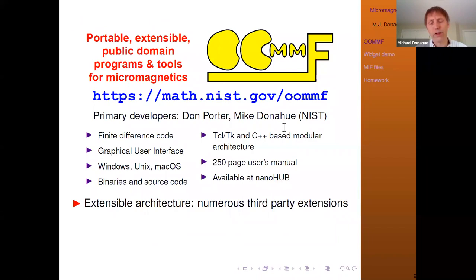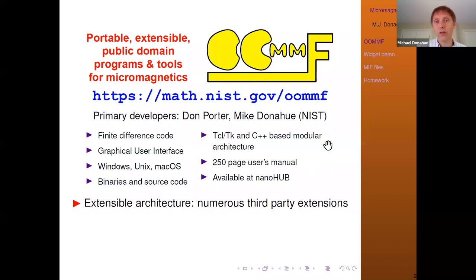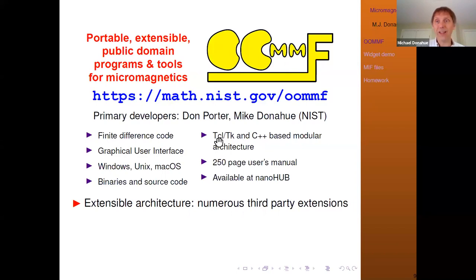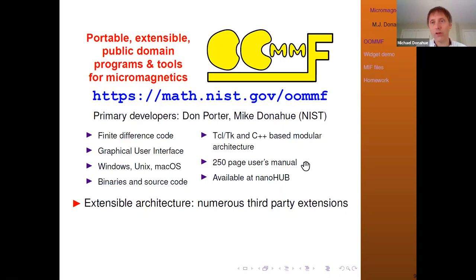The other leg of the two-legged stool is OOMMF — a finite difference code with a graphical user interface. It runs on Windows, Unix, and Mac; practically any Linux box. We provide binaries for Windows currently; otherwise you get the source code, which is included with the binary download. It uses Tcl, TK, and C++: computations are done in C++, the GUI in TK and Tcl, and the input MIF files are an extended version of Tcl. The user's manual is about 250 pages and is available on the OOMMF webpage and on NanoHub.